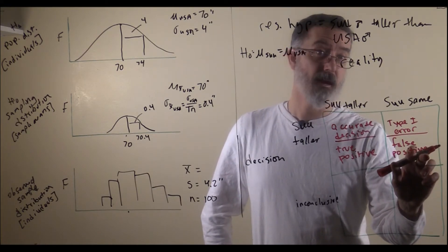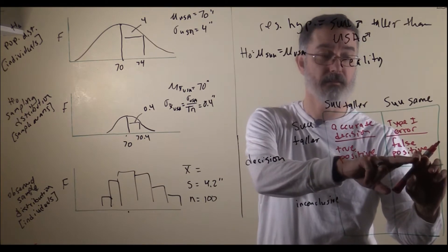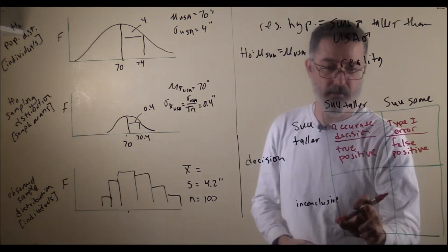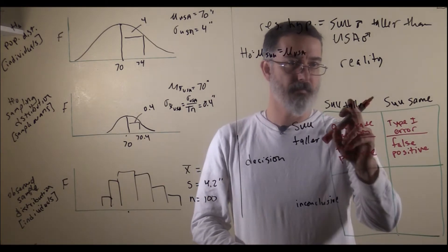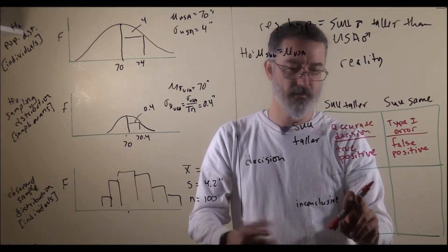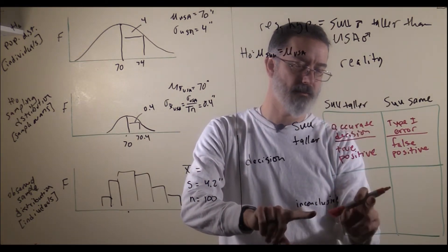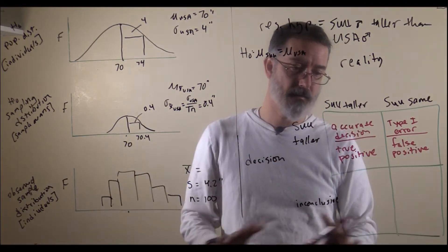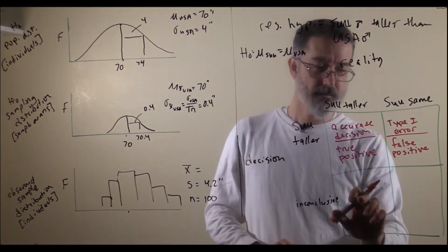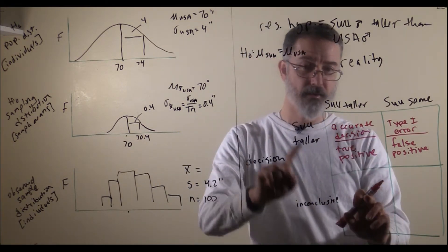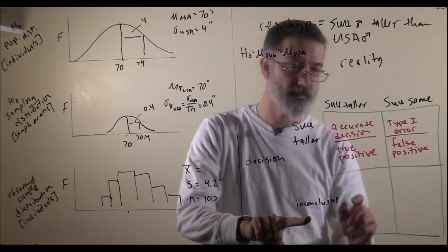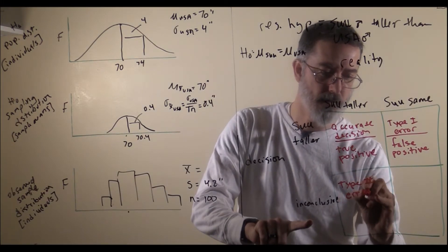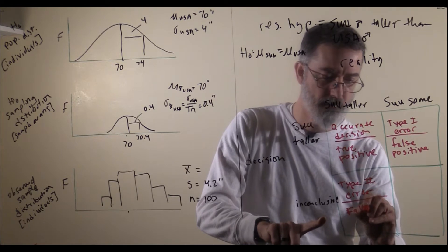Notice that a type 1 error is also a publishable finding, because you think you have discovered something. But your finding does not reflect the state of the world, so if people try following up on your research, they are going to waste their time, energy, and resources. On the other hand, if we run our Z-test and fail to reject the null hypothesis — deciding results are inconclusive — but in fact SUU men are taller, we have failed to discover what we were looking for. This is also a decision error, known as a type 2 error, or a false negative.